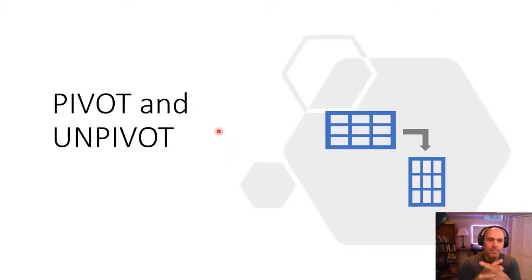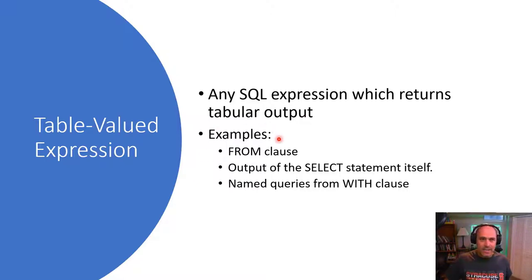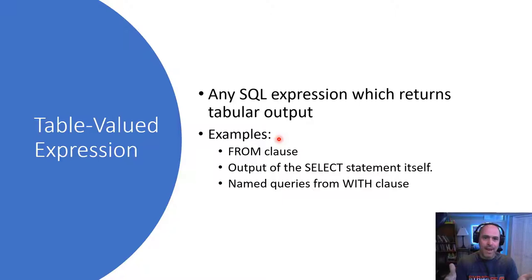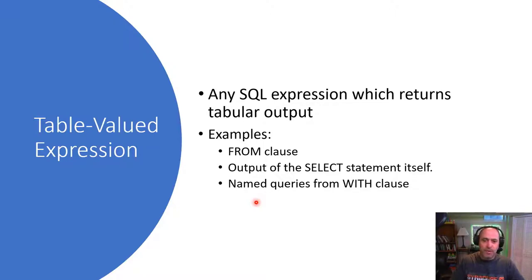Alright, let's talk PIVOT and UNPIVOT. Before we get into that, let's talk about what we saw in the previous demo: table valued expressions. A table valued expression is basically any SQL expression that produces a table — not a database table created with CREATE TABLE, but the output in tabular format. You can get a table valued expression from the FROM clause output of a full SELECT statement, and also from named queries using the WITH clause. We will use named queries and WITH in the examples with PIVOT, because the way PIVOT works it requires a table valued expression.